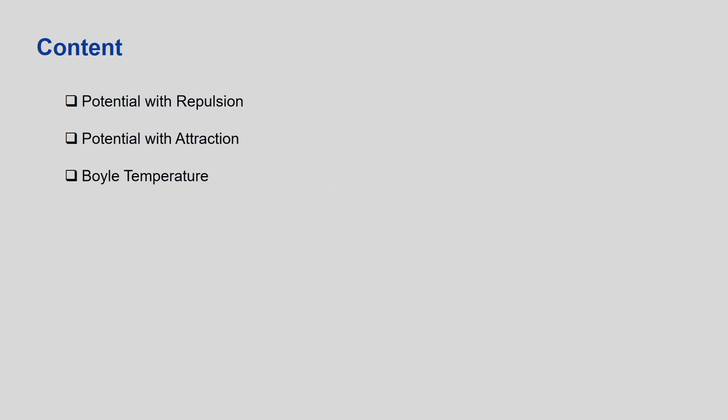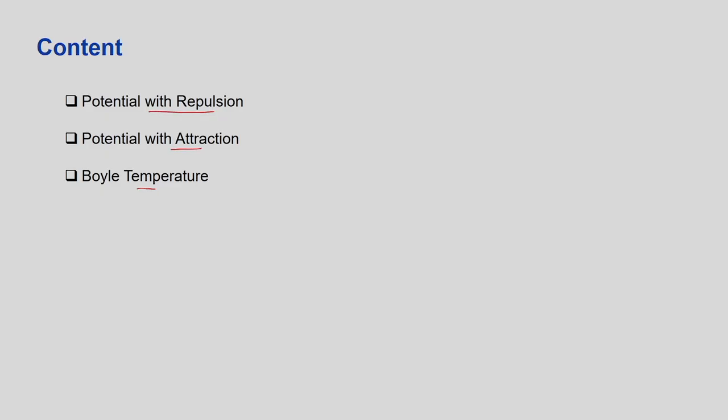We have potentials with repulsion, potentials with attraction, and the Boyle temperature. Whenever I talk about potential, I am talking about the inter-atomic potential — that is, the potential between two atoms and how they interact with each other. Repulsion means repulsive forces are dominant; attraction means the attractive force is dominant. The Boyle temperature is the point where both repulsive and attractive forces are balanced. We will take each of these models one by one.